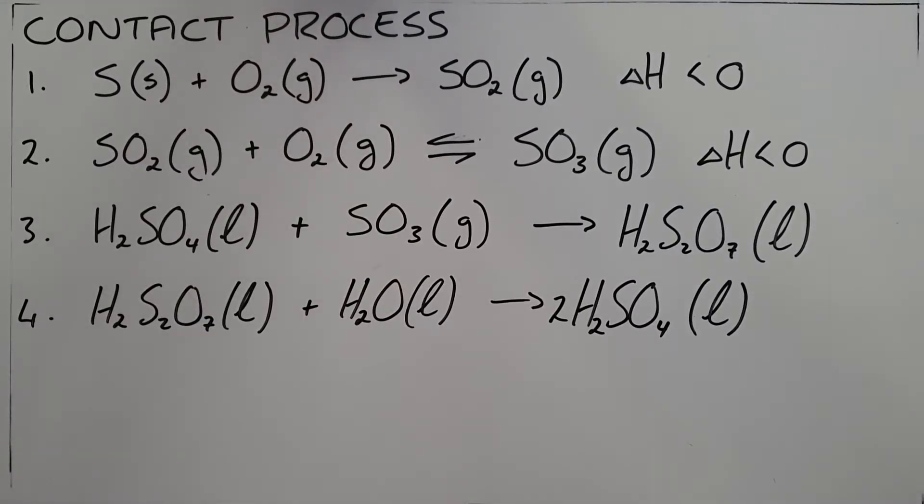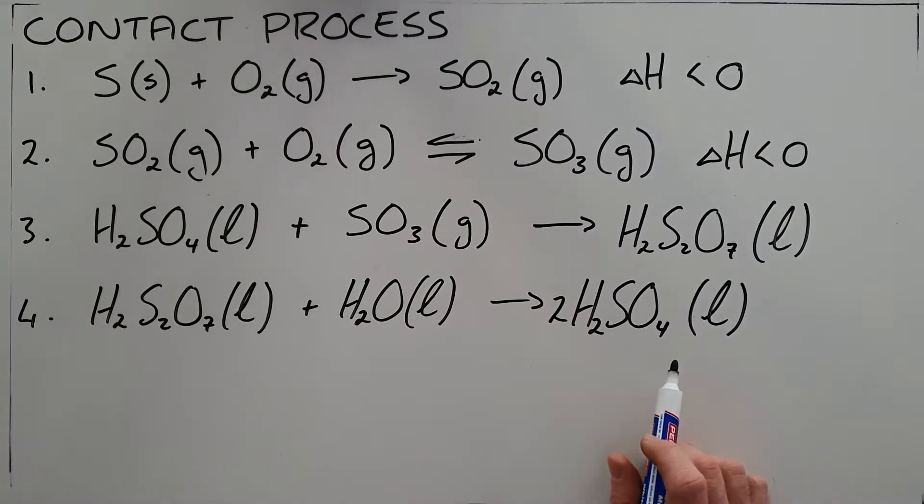The contact process is the third important process in the fertilizer industry. As you can see, it ends with a production of sulfuric acid that we use in a number of our fertilizer minerals.